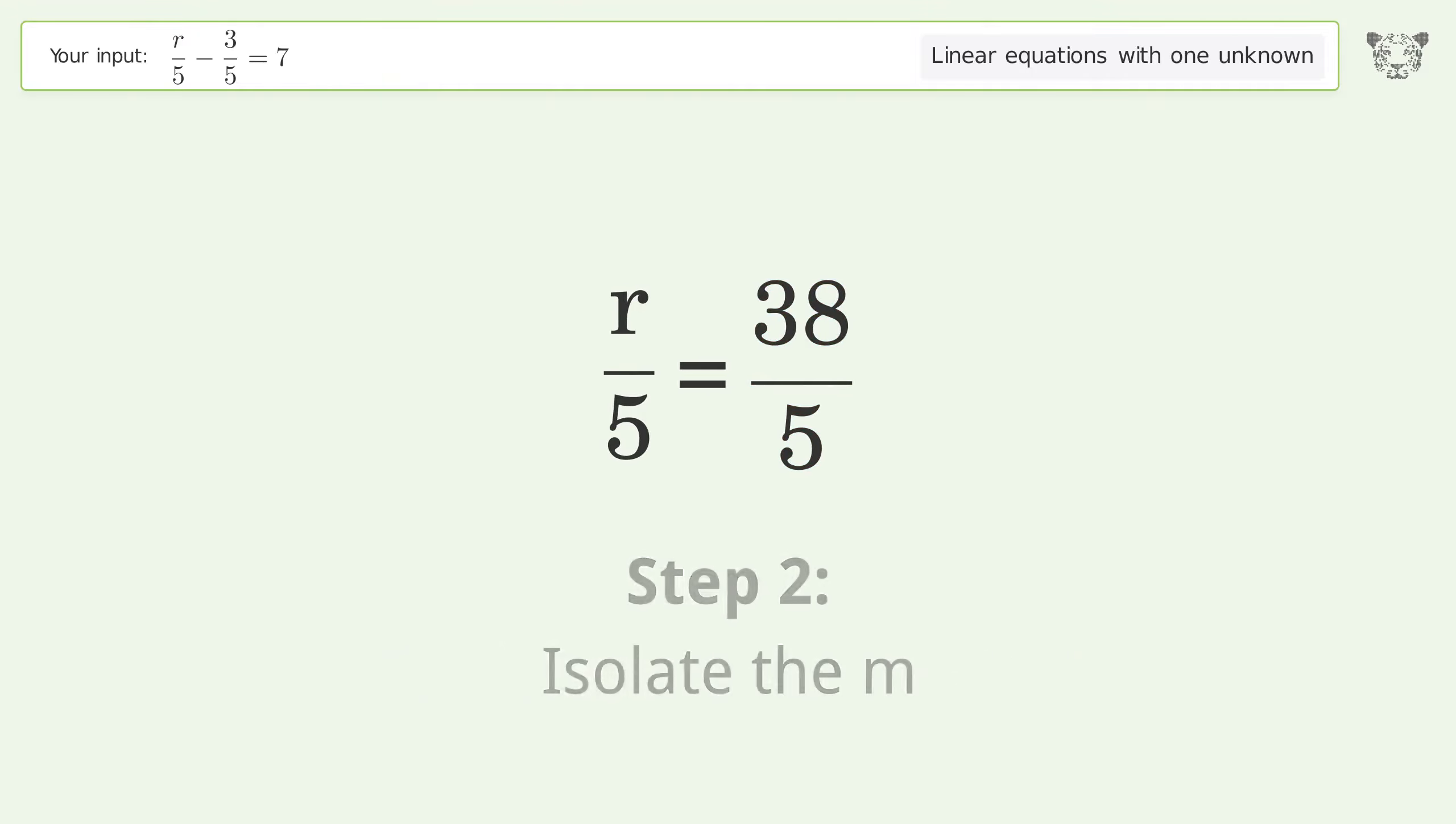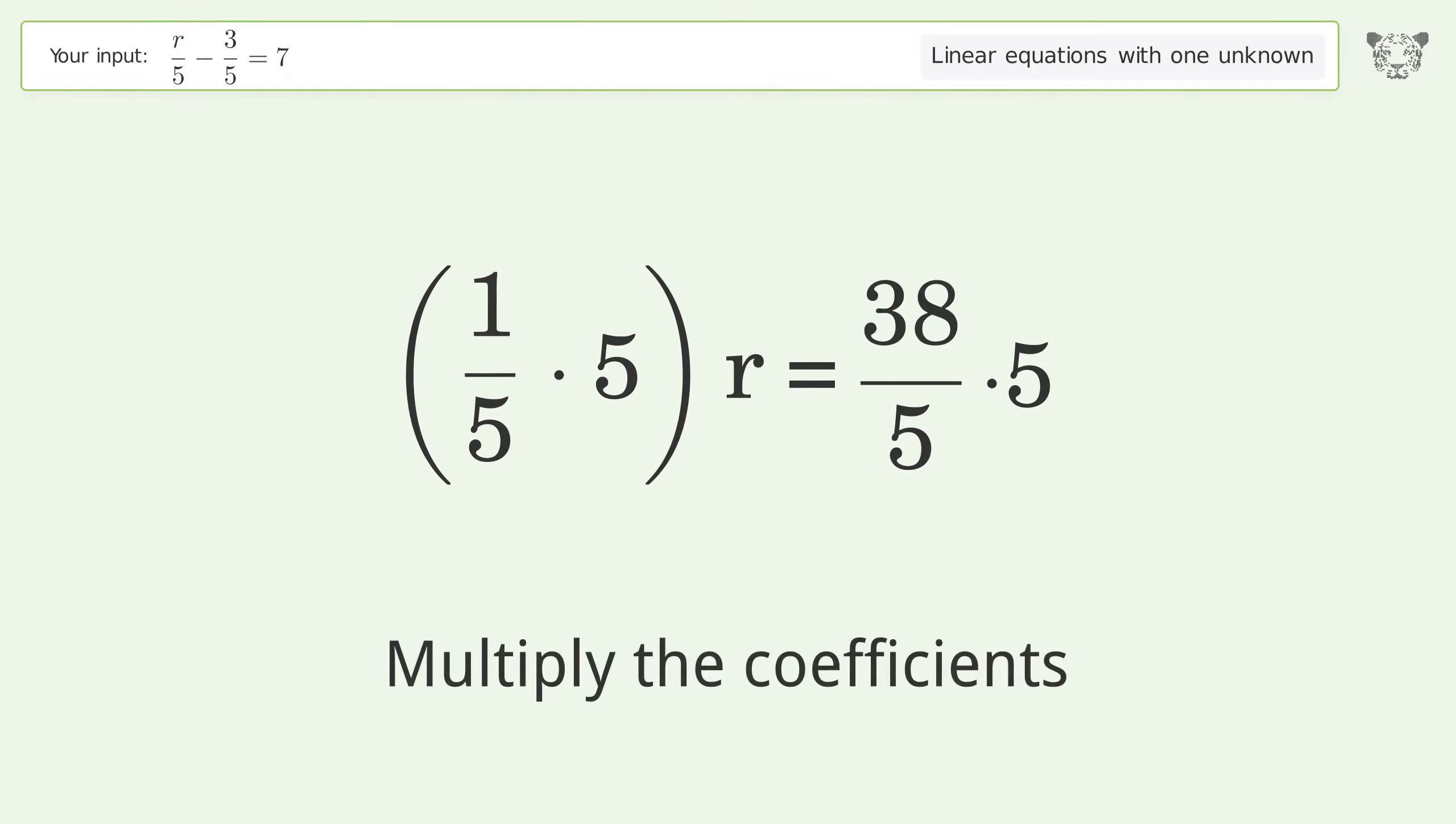Isolate the variable by multiplying both sides by 5. Group like terms. Multiply the coefficients.